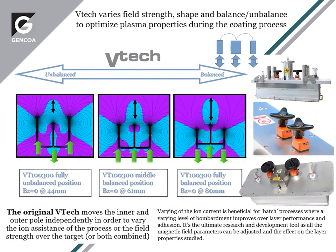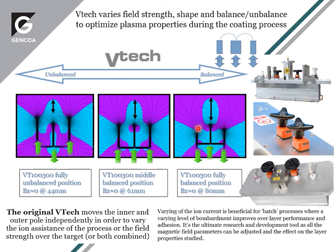Another variable magnetron is the original V-Tech, produced for many years. It moves the inner and outer poles independently, allowing us to change both strength and balance. With the outer magnet poles pushed forward and the central one retracted, it creates an unbalanced effect releasing plasma close to the target. In its middle position with both poles forward it creates a more balanced field, and in its most balanced mode retracting the outer magnets and pushing the center forward creates lower release and less energy going into the process.